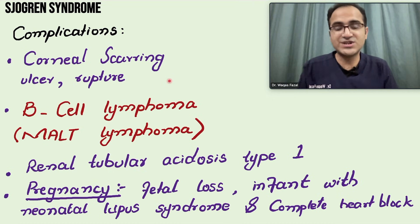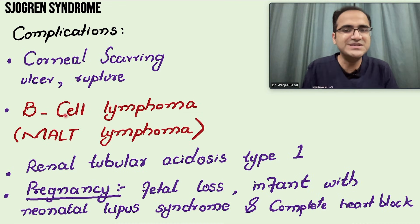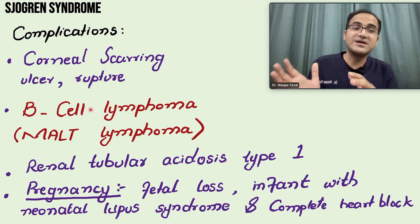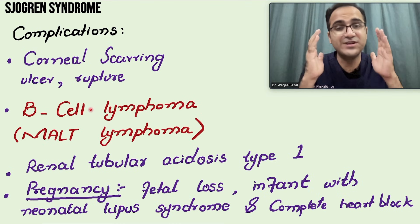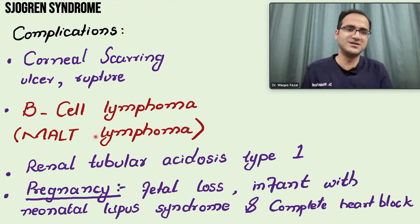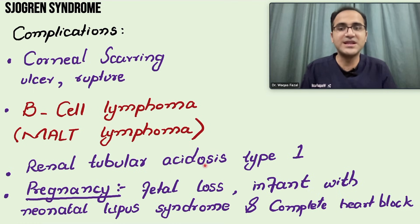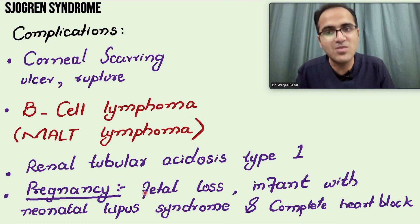The complications of Sjögren's syndrome are very important. The most critical complication to remember is B-cell lymphoma — MALT lymphoma — which is very commonly tested in exams. Patients with Sjögren's syndrome are at high risk of developing MALT lymphoma. Other complications include corneal scarring, ulcer, and rupture; renal tubular acidosis type 1; and in pregnancy, fetal loss and infants with neonatal lupus syndrome and complete heart block — similar to neonatal lupus — are associated with Sjögren's syndrome.